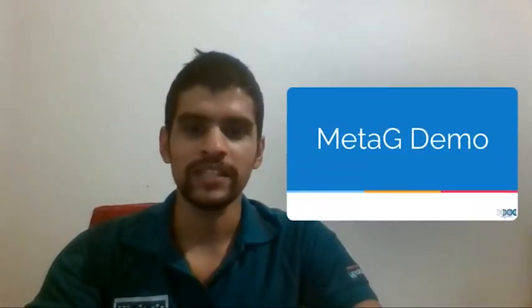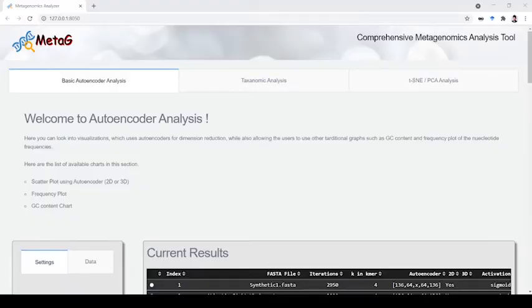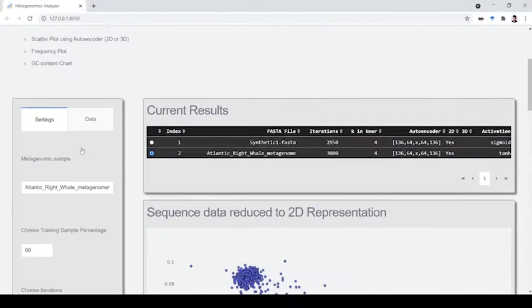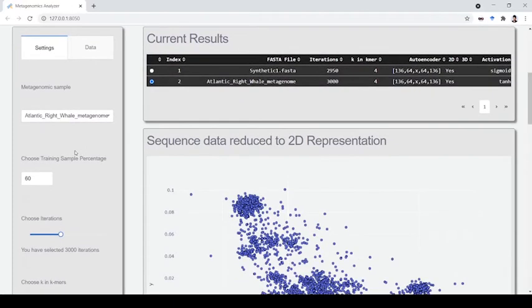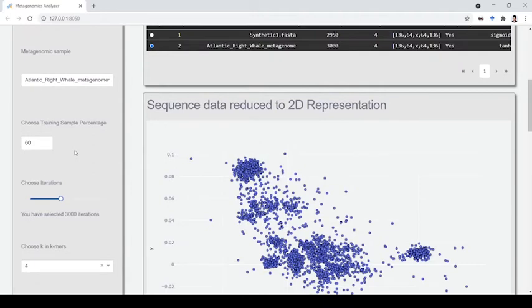Let's take a quick look at Metagy in this short demonstration. This is Metagy. This tab is the autoencoder analysis tab. What you see here is the settings toolbar where you can choose your FASTA file and set the parameters for the autoencoder like the k-value, autoencoder layers, and the activation function.